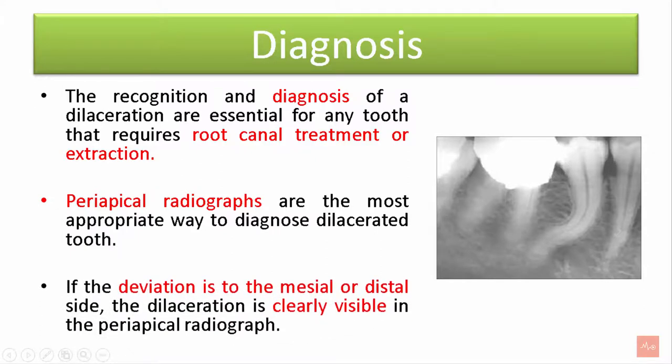If the deviation is to the mesial or distal side, the dilaceration is clearly visible in the periapical radiograph.